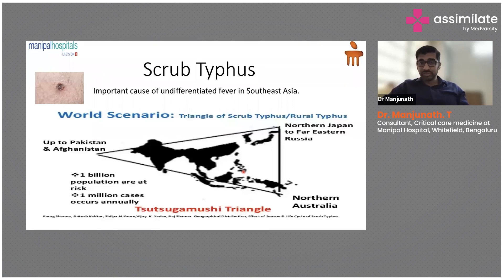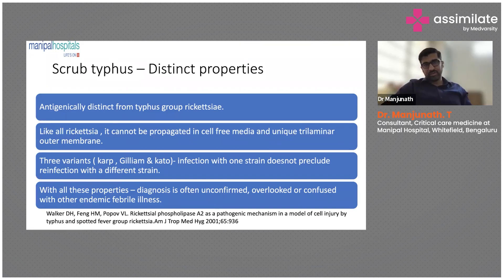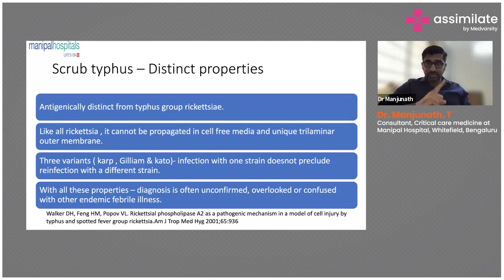Scrub typhus is antigenically distinct from the typhus group. It cannot be propagated in any cell-free media and has a unique tri-laminar outer membrane making it very difficult to isolate in culture media. It has three variants — Karp, Gilliam, and Kato — and infection with one strain does not preclude reinfection with a different strain, making it actually more dangerous than COVID in some respects.